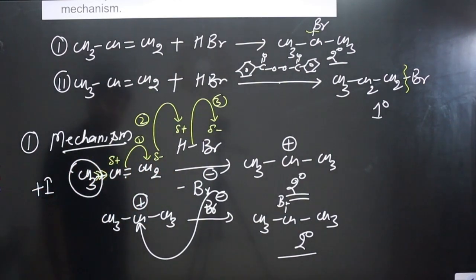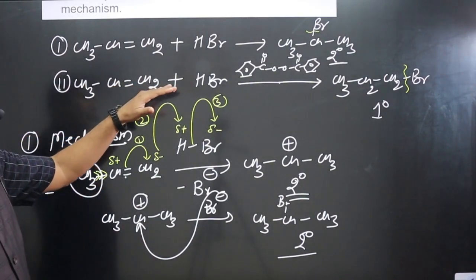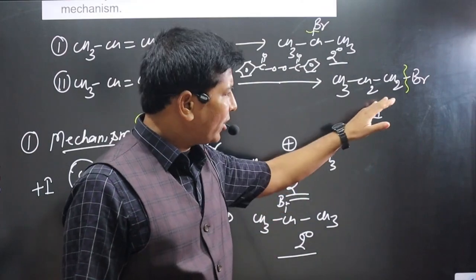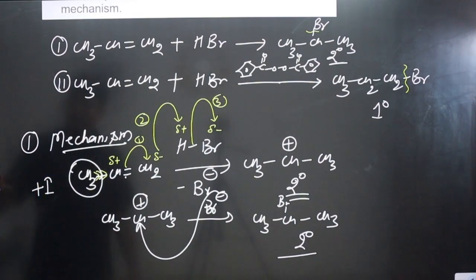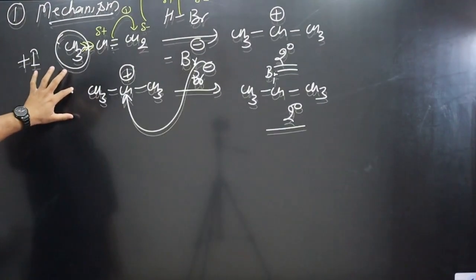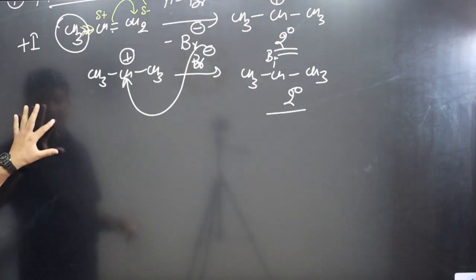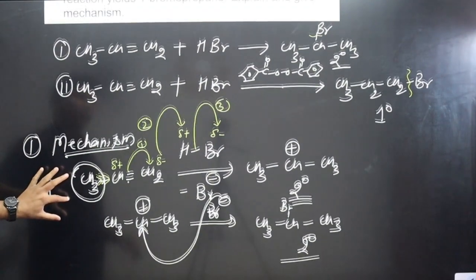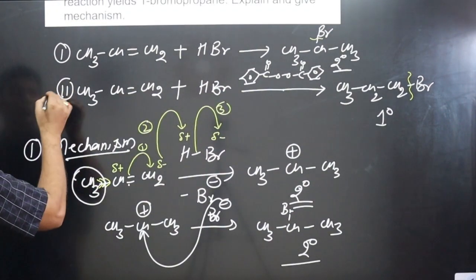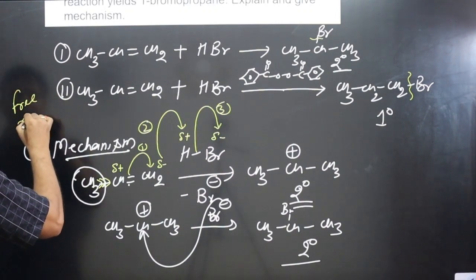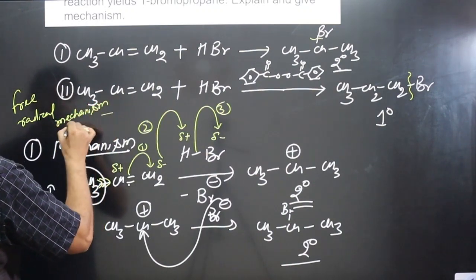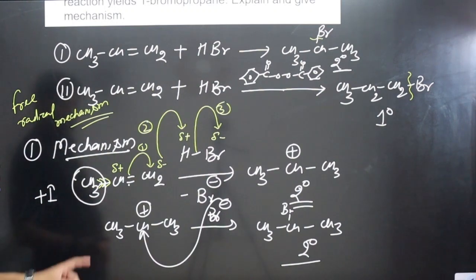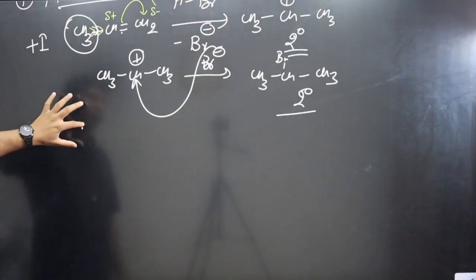Now the interesting part: in the same reaction, if we use benzoyl peroxide, how do we get a primary alkyl halide? We can understand this via the mechanism for the second chemical reaction. Keep in mind the second chemical reaction takes place via a free radical mechanism, unlike the first reaction where we form a stable carbocation using the positive inductive effect.